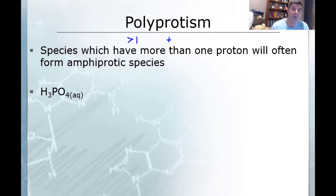I mean for it to be poly you'd want more than two, but sulfuric acid is a good example here because it's a species that has more than one proton and therefore it often will form an amphiprotic species. So the example that I've looked at here is phosphoric acid.